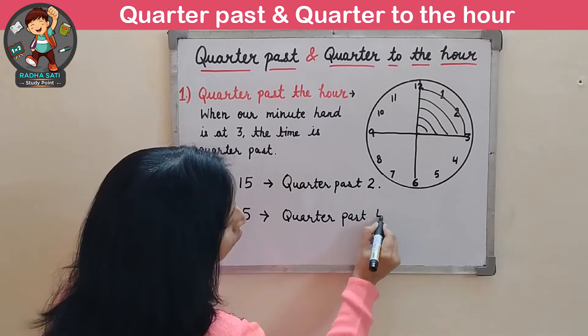Now we will discuss the concept of quarter to the hour. Whenever our minute hand is at 9, the time will be quarter to the hour. When the minute hand is at 9, it has crossed three quarters — the first quarter, second quarter, and third quarter — and only the last quarter is left. So in this concept, we focus on this fourth quarter.